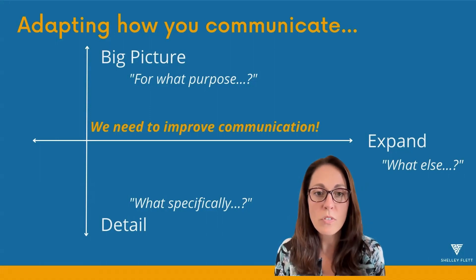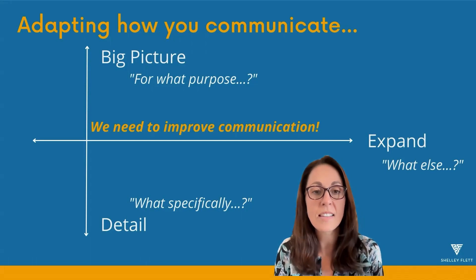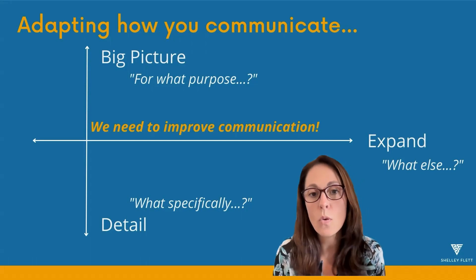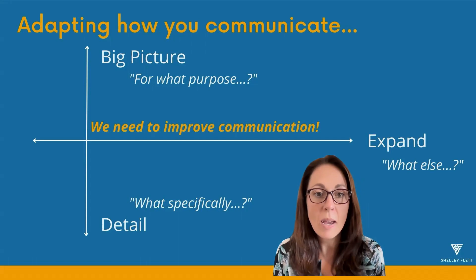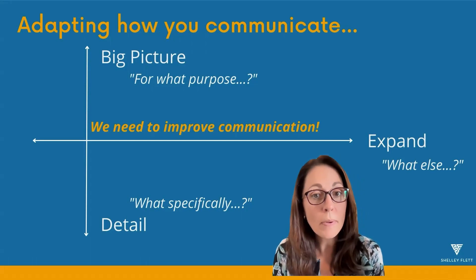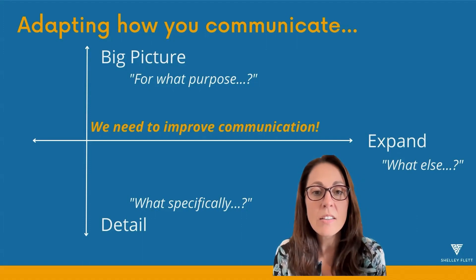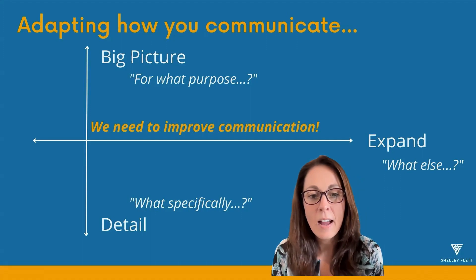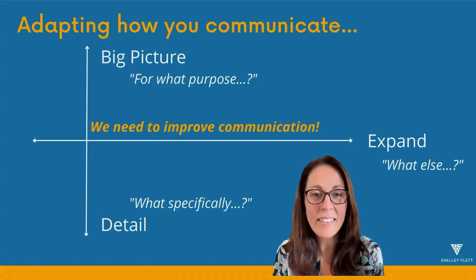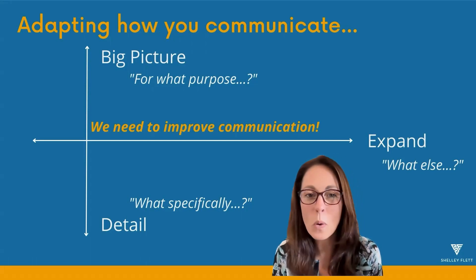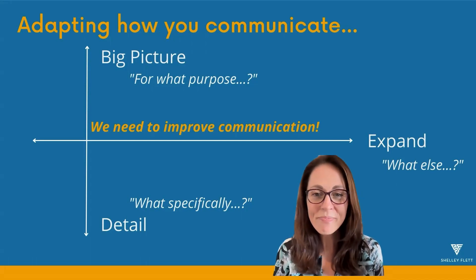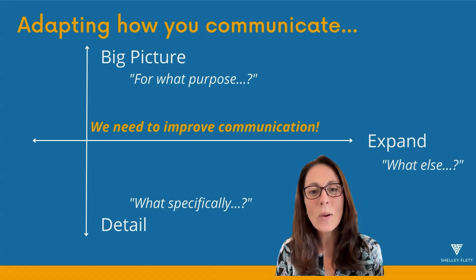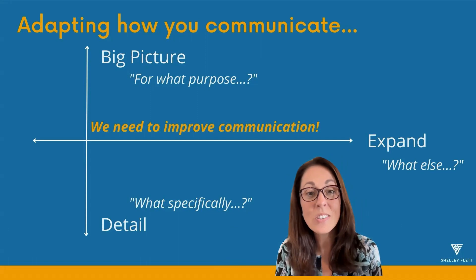They might say 'we need to improve communication so that we're all aligned to the organisational values.' Okay, and for what purpose do we all need to align to our organisational values? 'To make sure we're operating consistently.' And for what purpose do we need to operate consistently? 'So that our clients feel like they're communicating with one consistent brand — it helps our reputation and helps clients know what to expect.' You might continue: for what purpose do we want clients to stay with us? And on and on. So we understand that improving communication is ultimately so we can retain our clients.